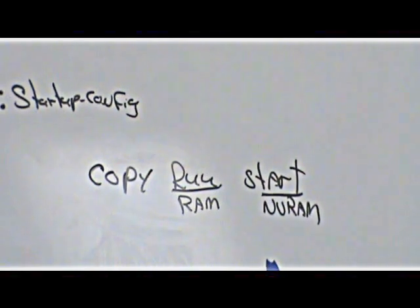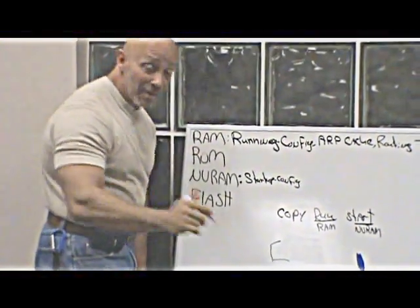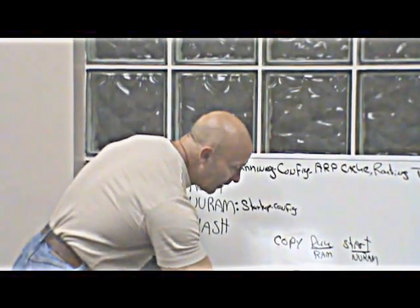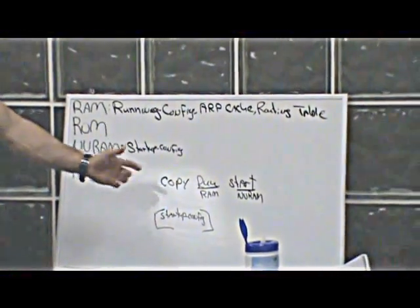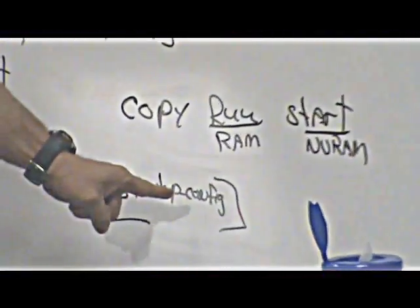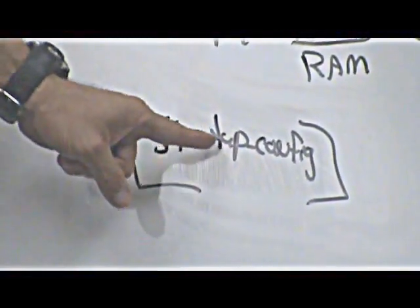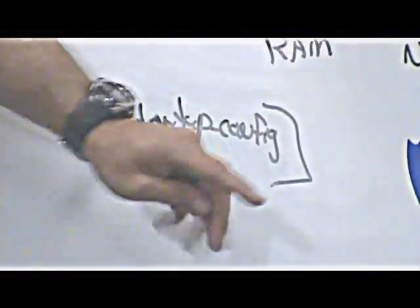When you run the command, it's going to ask you — in brackets it will show you the name of the file: startup config. It's waiting for you to do something. All you've got to do is hit Enter, because you are acknowledging — you're saying yes, I agree. That's the name of the file I want to copy it to. If you write anything else, you're changing the name of the file. So just hit Enter and it will copy it to that file.